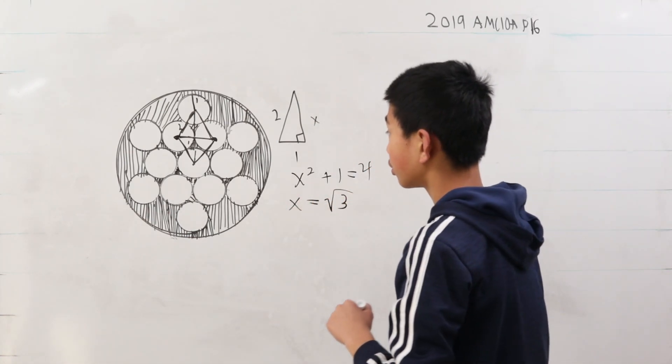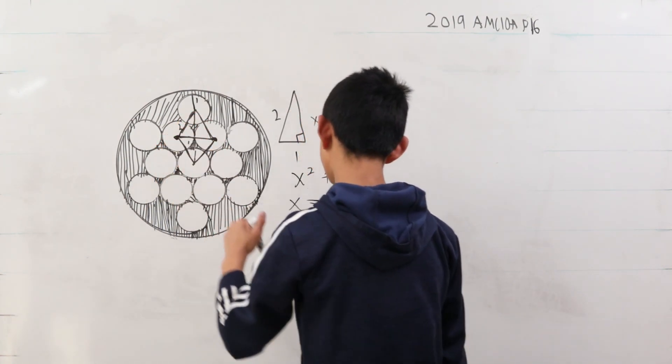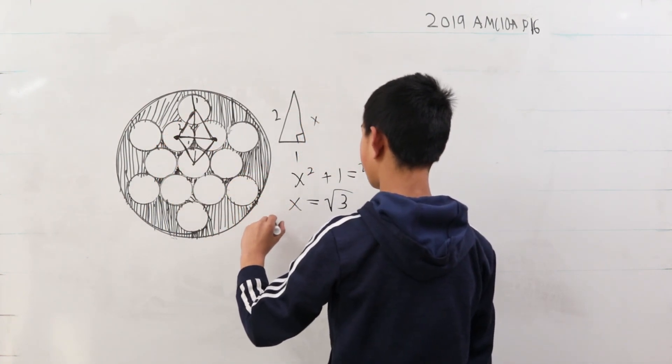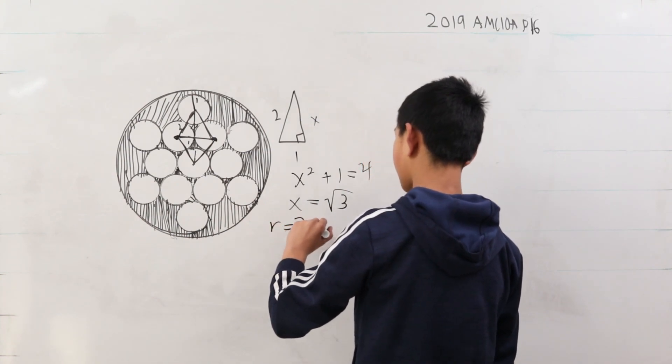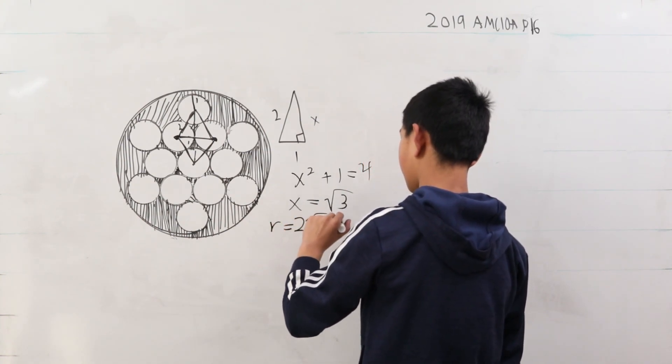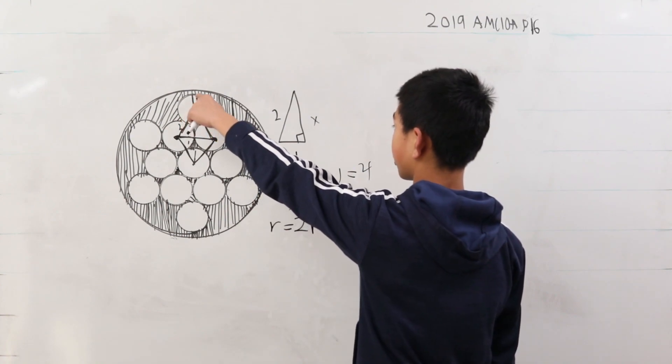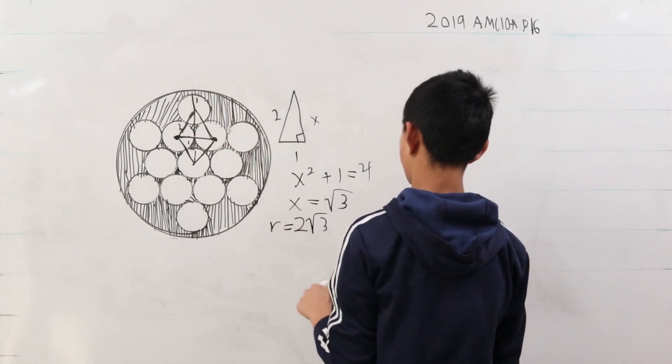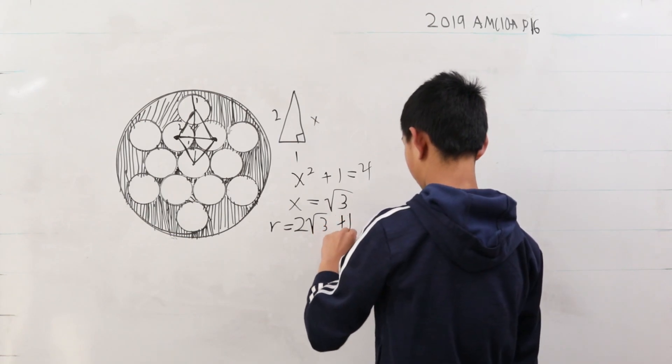So we know that this is x. Now, there's 2 of x, so the radius is going to be 2 of these x's, which is 2 root 3. And then there's this extra radius up here that's supposed to be touching the outer rim of the circle, so that's plus 1.